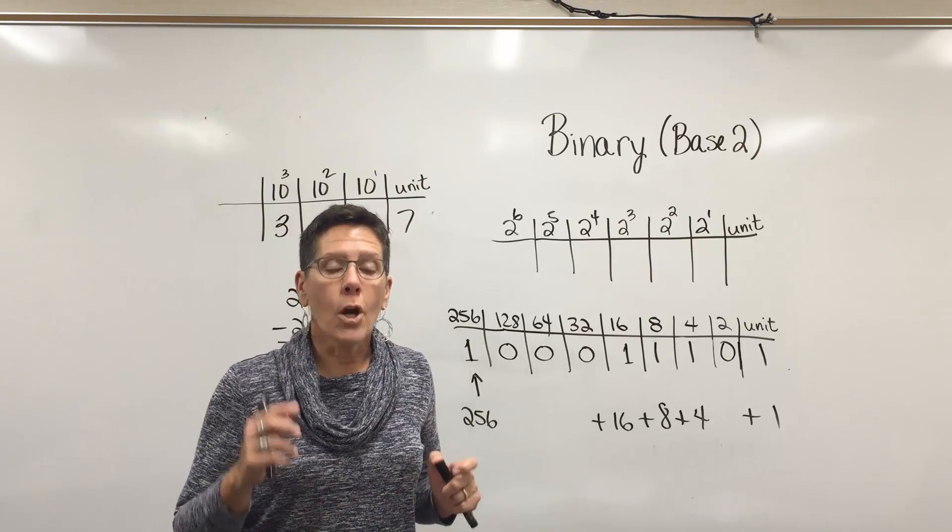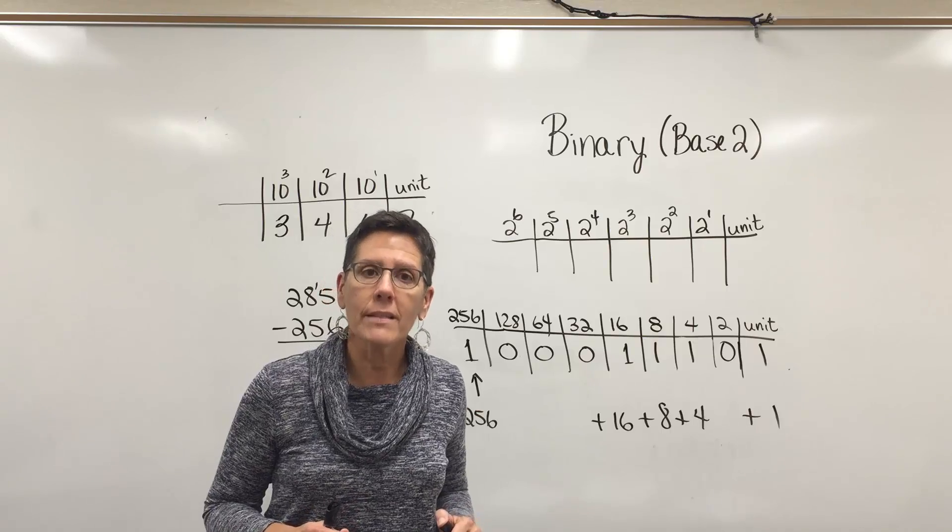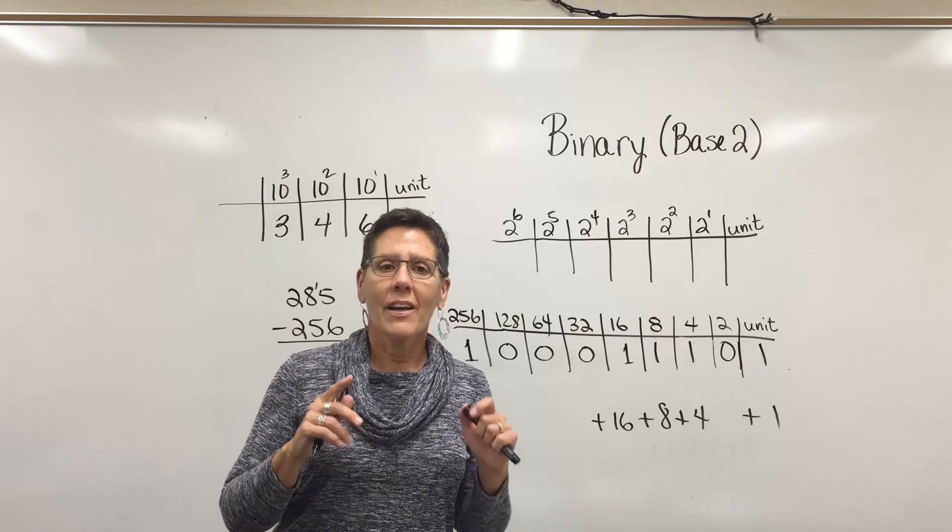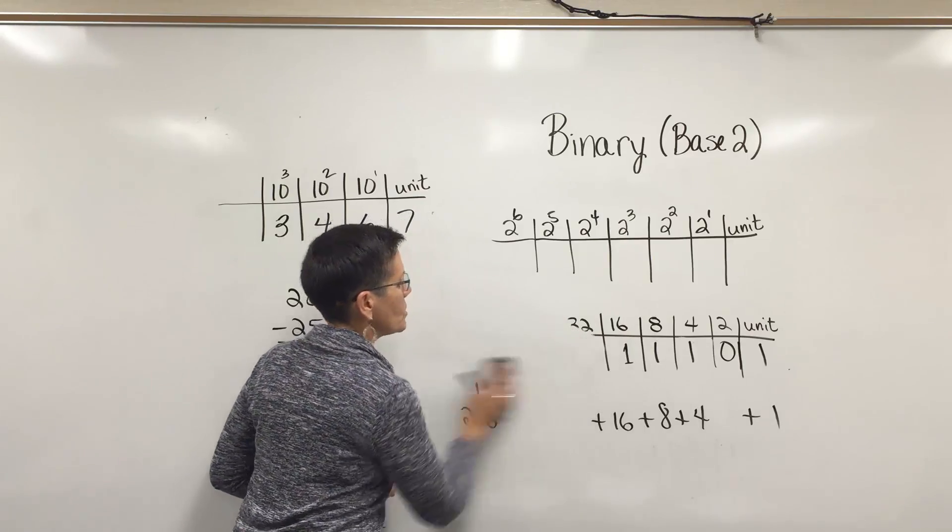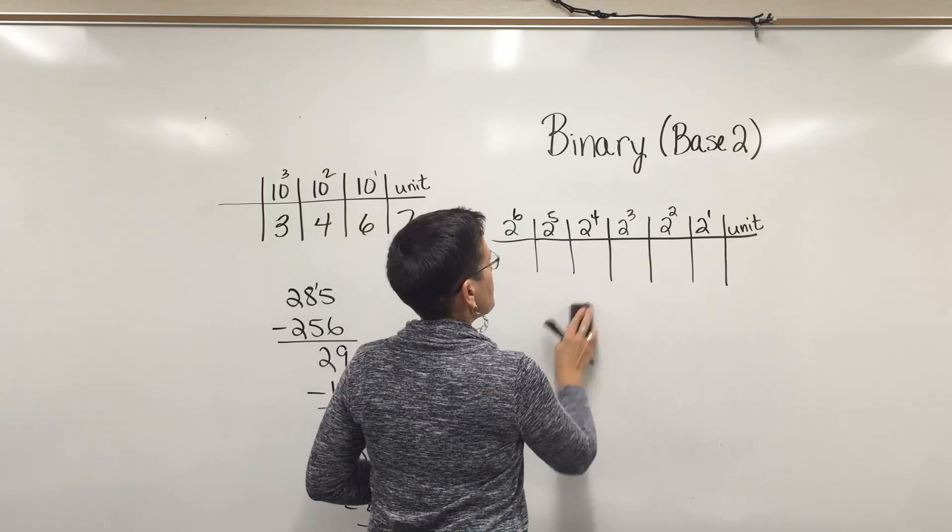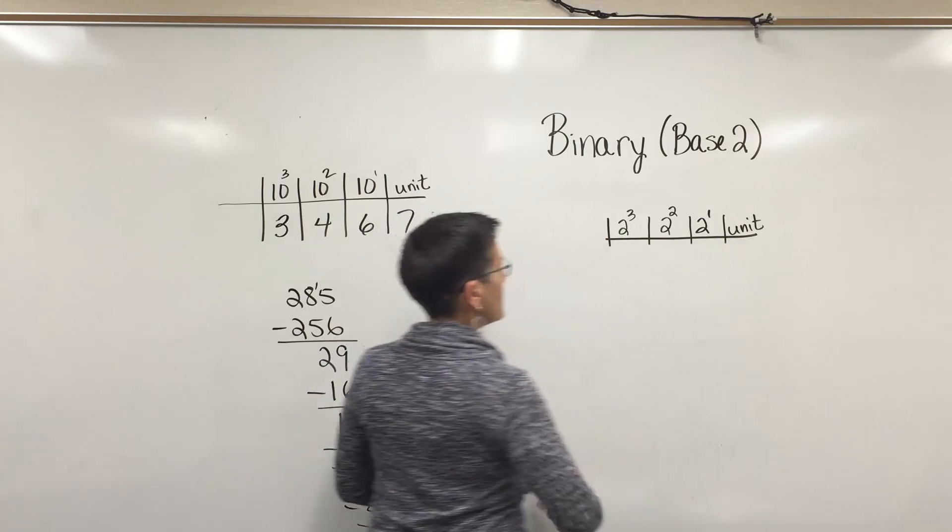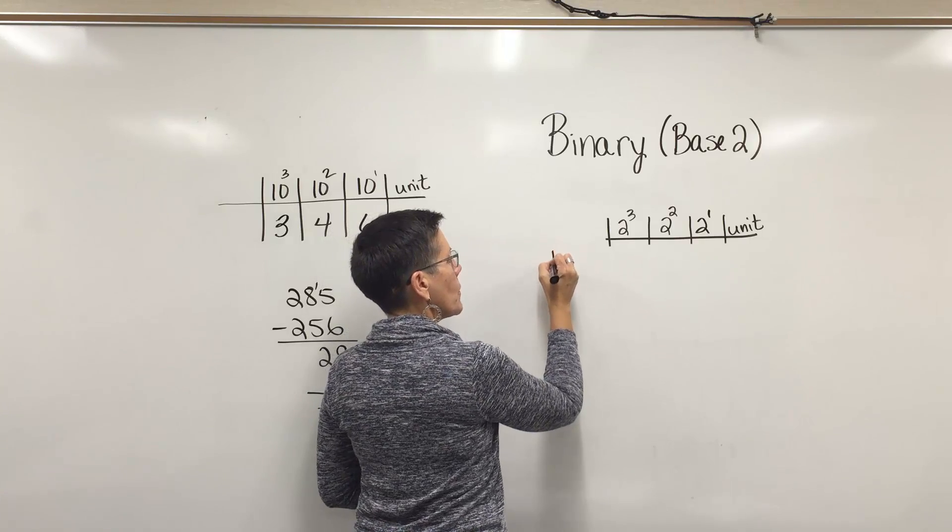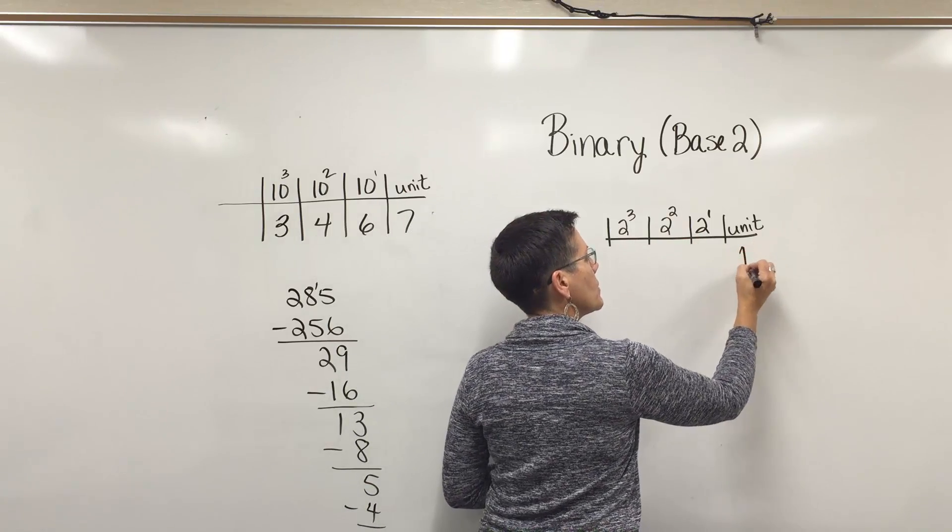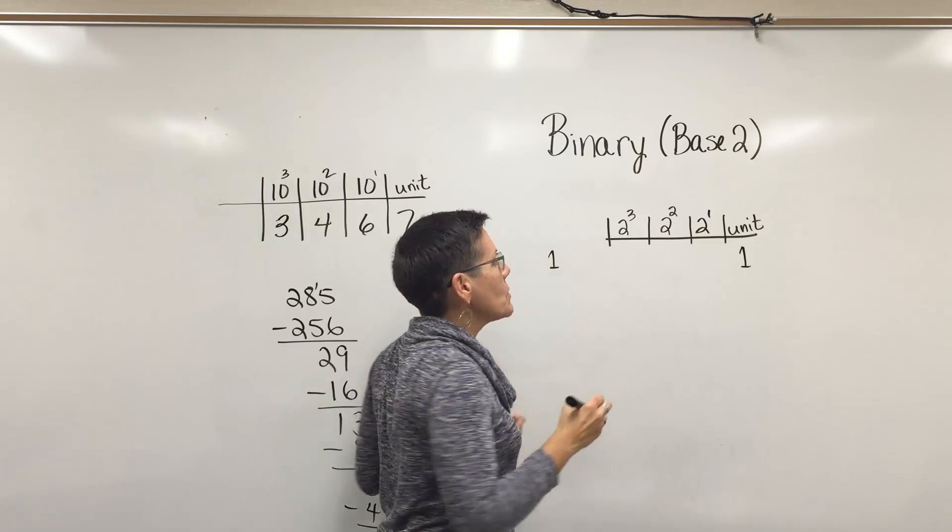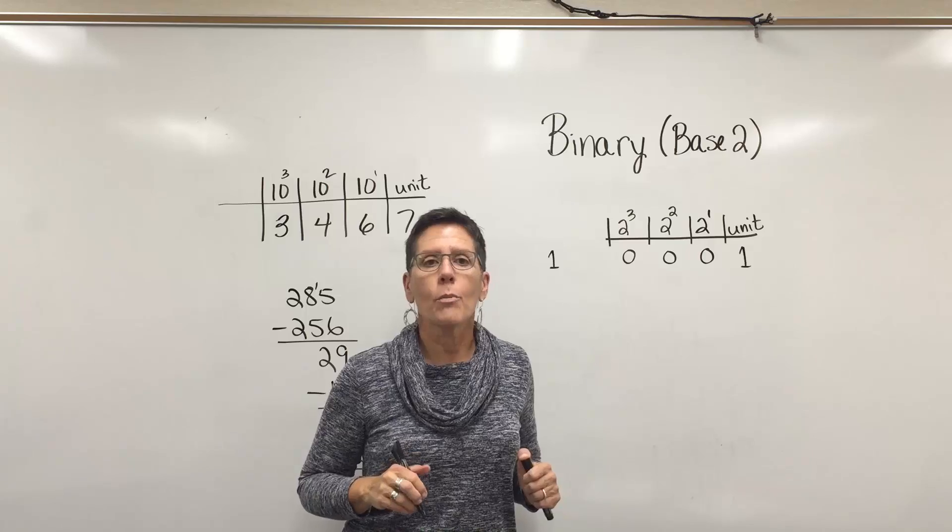Computer science students know by heart the digits 0 through 15 because they also have to work with the hexadecimal system, which is base 16. The values in binary notation 0 through 15, this is how those students know those values. They use the first four positions in the binary chart.